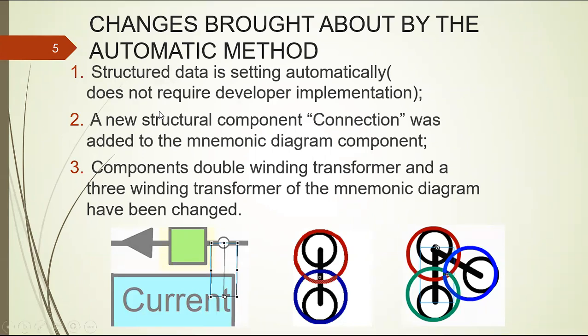Second change is a new structural component connection that was added to the mnemonic diagram component library. The connection component performs the function of transferring the structural parameters from node or branch copies to voltage or current output component copies. When constructing a mnemonic diagram, as you can see on the left figure, a copy of the connection component must be placed so that one end of the line enters the node or branch and another must enter the intents of the voltage or current output.